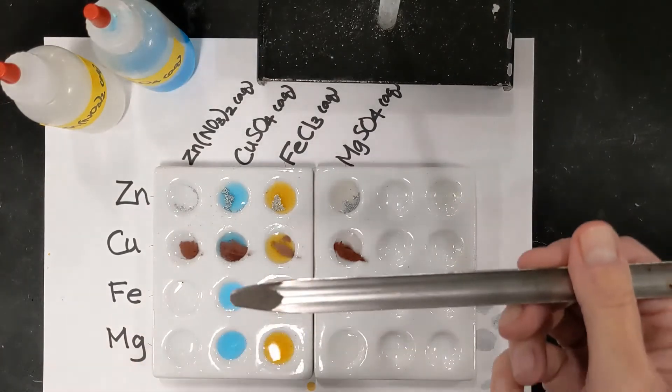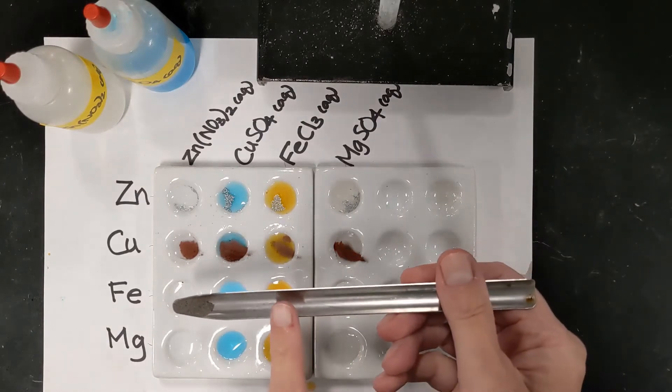Next for the iron. The iron is a very dark gray powder.